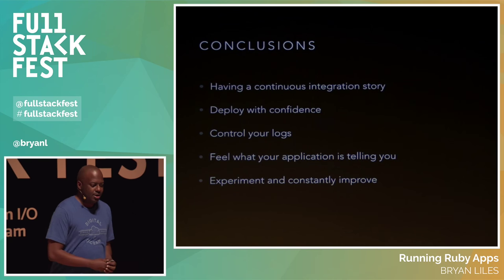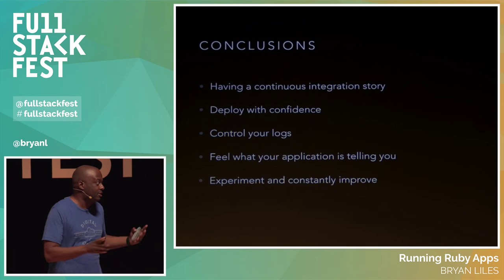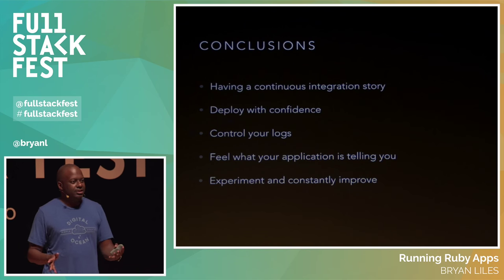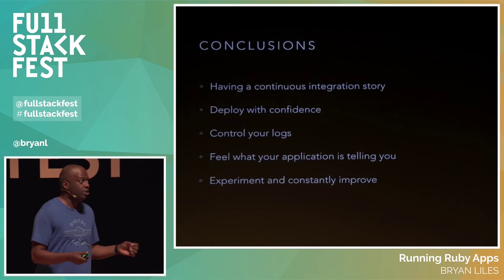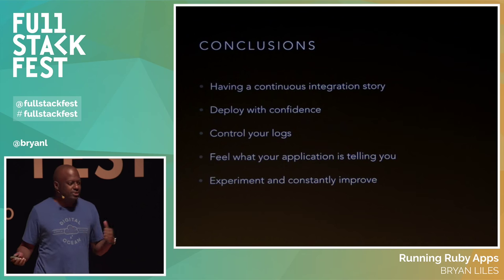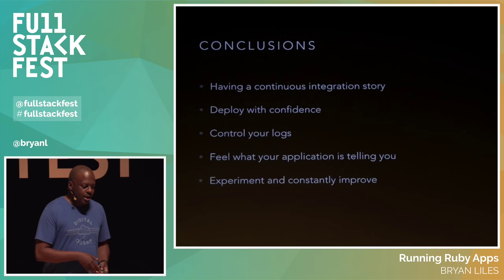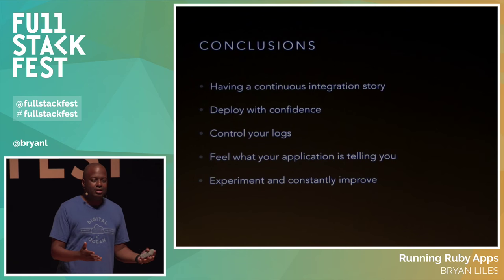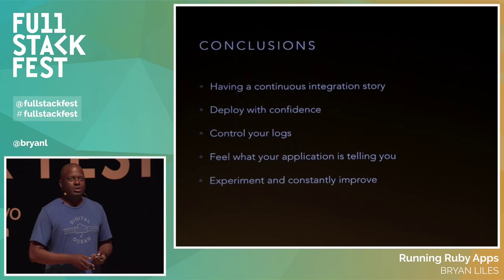So, in conclusion: you need to have a continuous integration story — it's very important. You need to deploy with confidence, so whenever you do your deploys, you need to know it will work every single time. You need to have control of your logs — if you don't have control of your logs, things just go bad. And you need to have one-on-ones with your application: not only understand what's happening with your application, but feel what's happening with it. Always experiment and constantly improve.